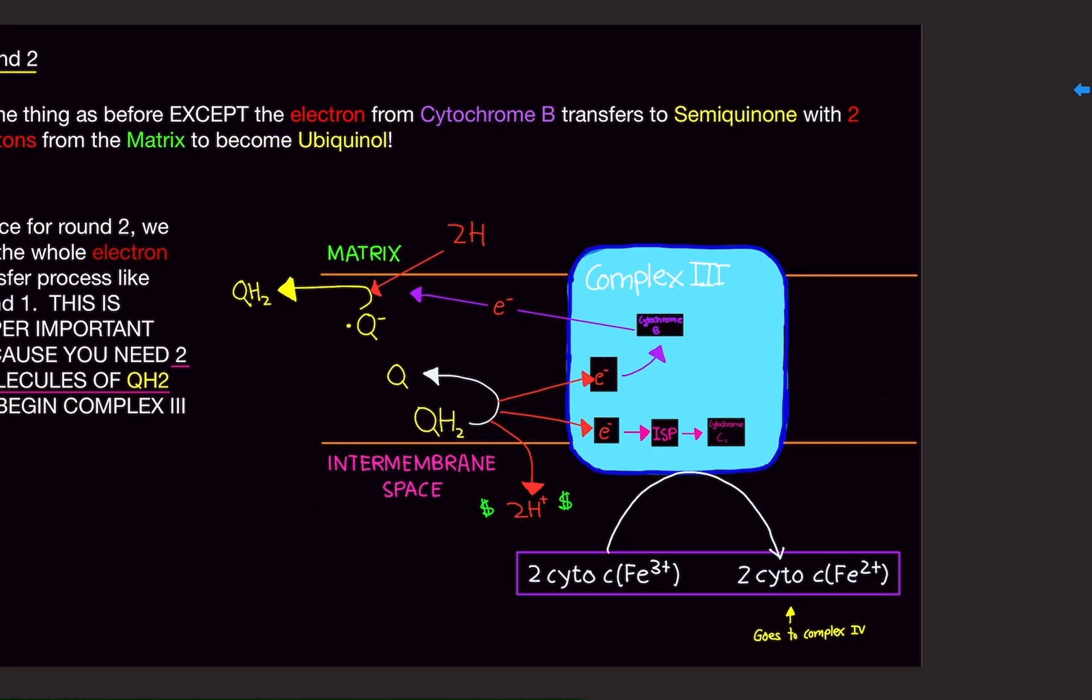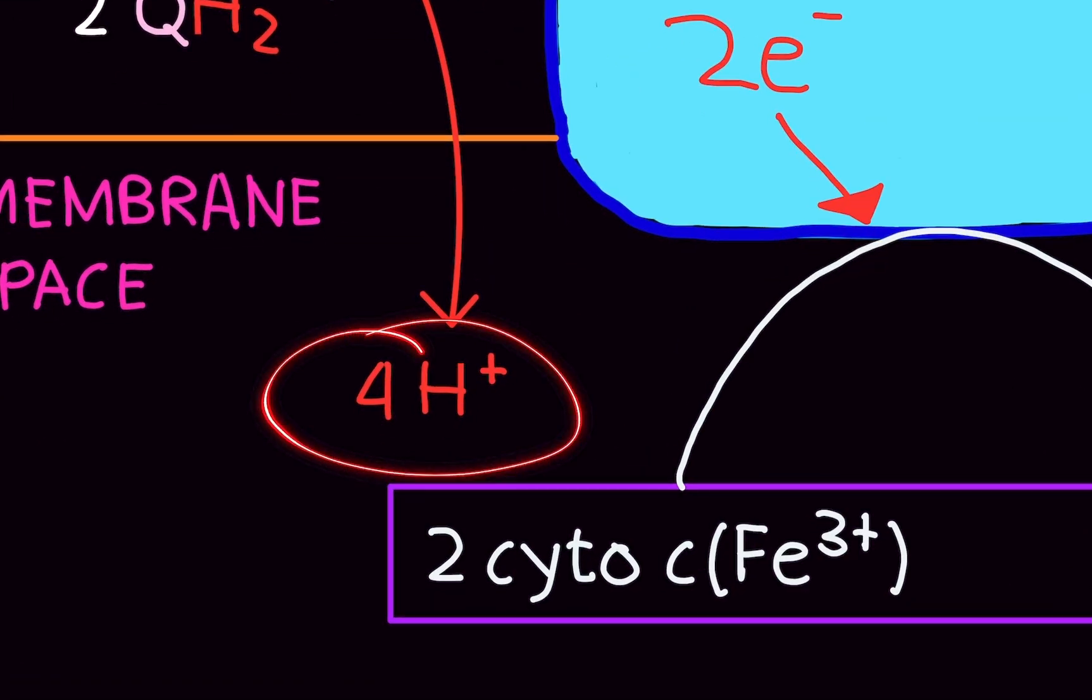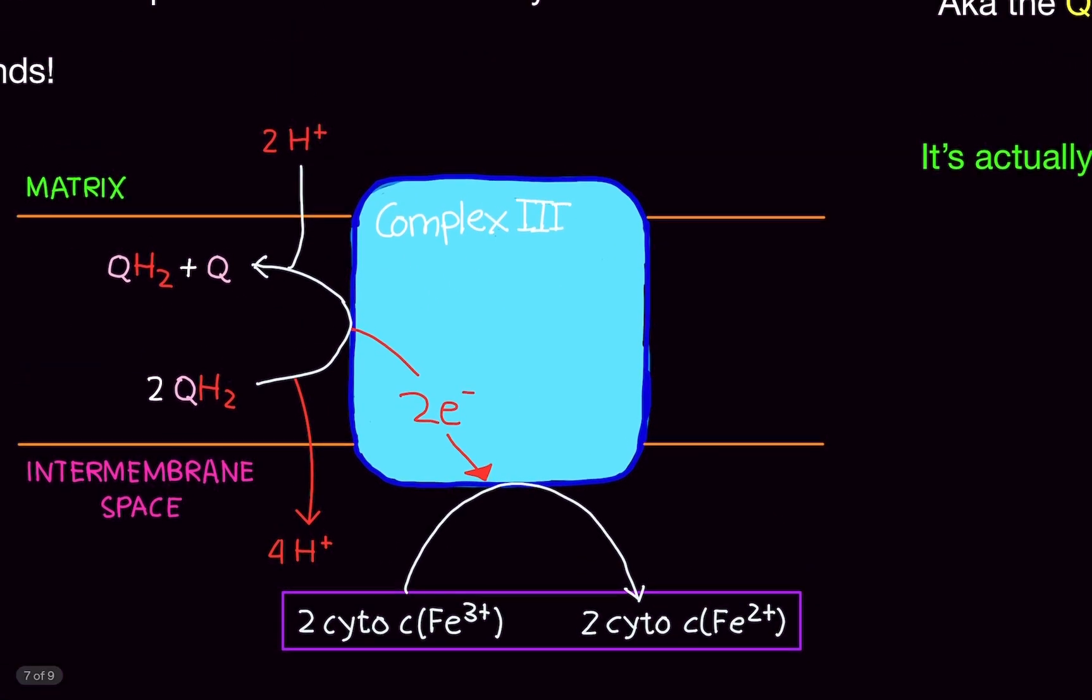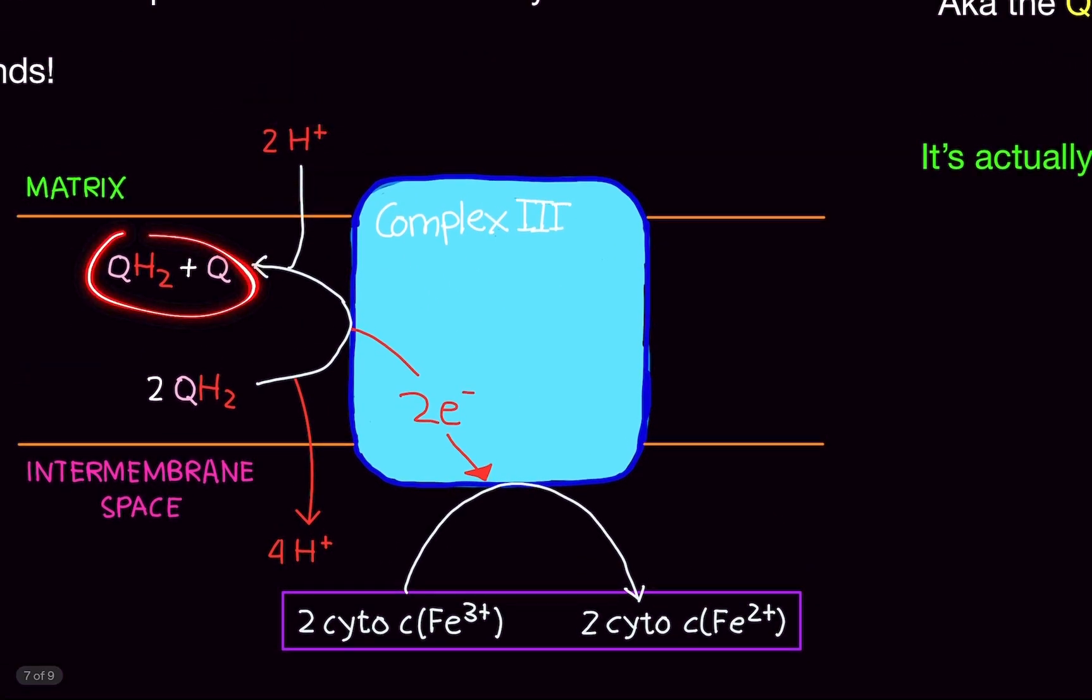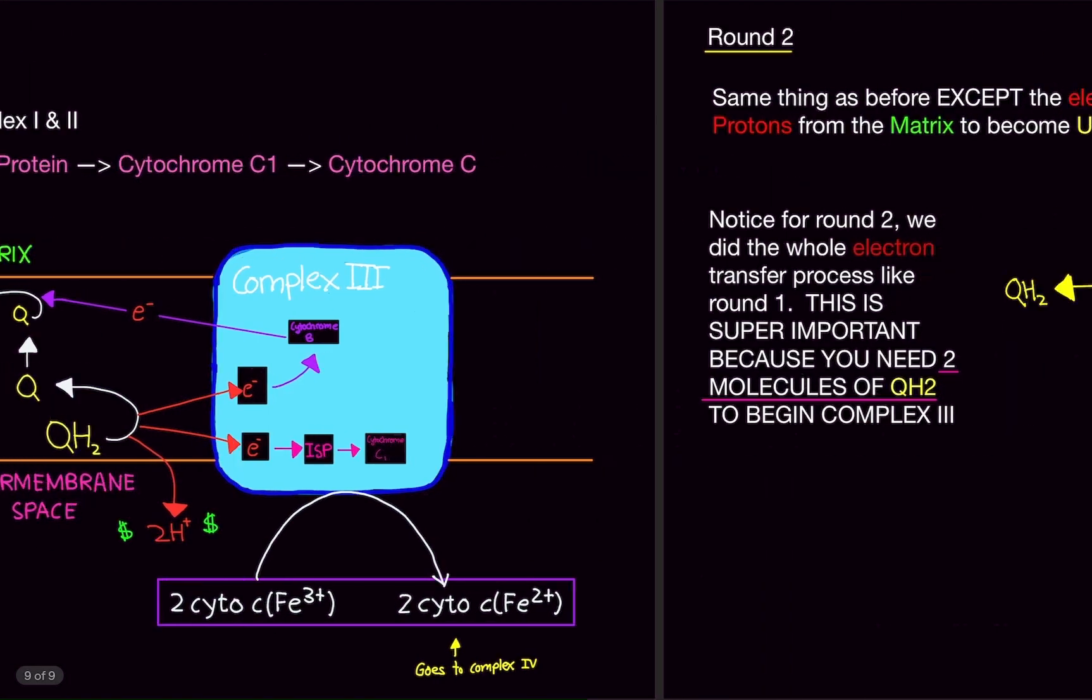So, technically, we have four protons we're shoving in, but two protons have to be shoved in into the complex here from the matrix. So, really, the net is two protons. That's what the net is. So, it's costly where we have to use half the protons to do this.